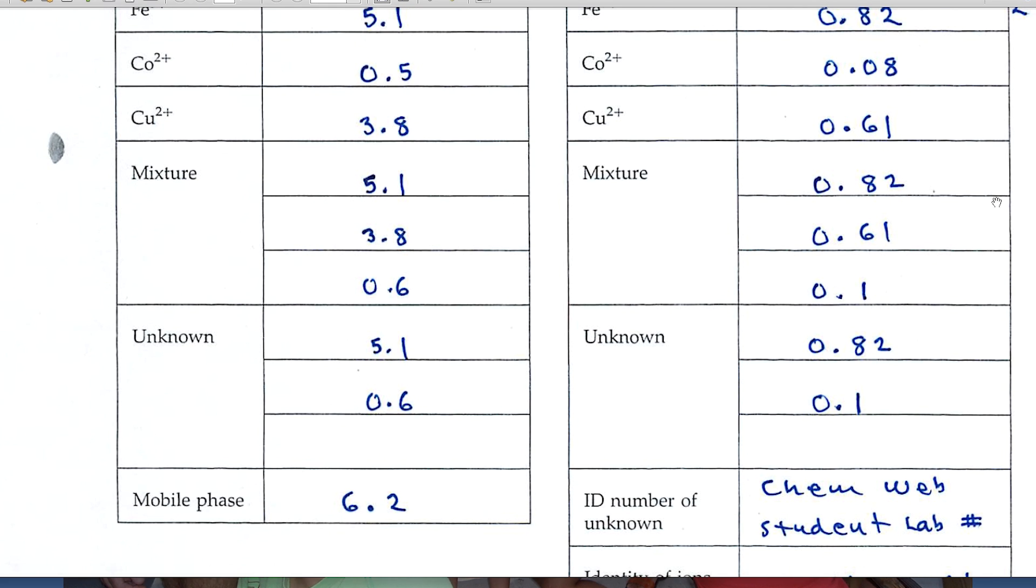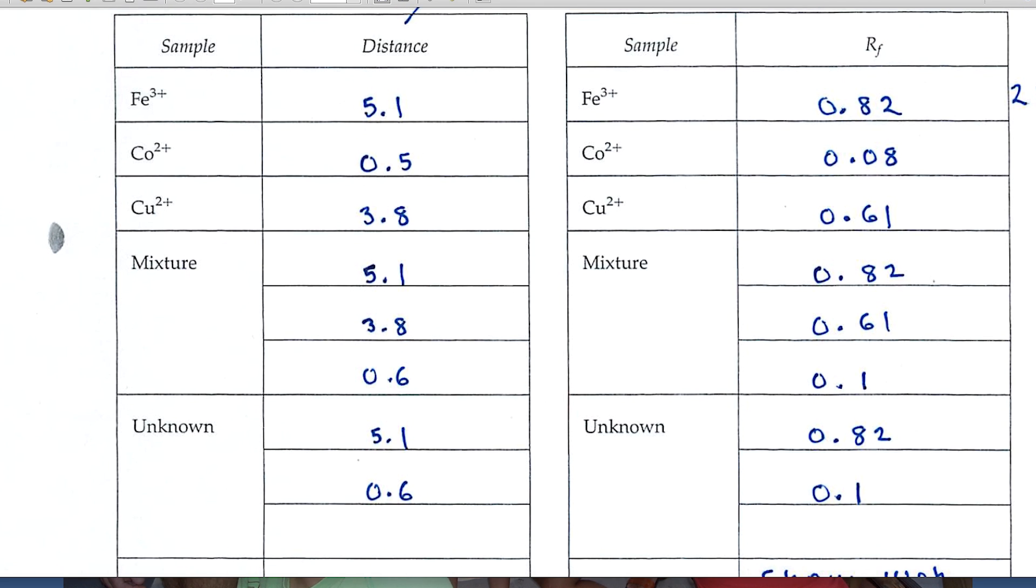Here's where I've recorded the RF values for the mixture. 0.82, well, that must be the iron ion. 0.61 must be the copper. 0.1, well, it's just about the same as cobalt. So it is the cobalt ion.